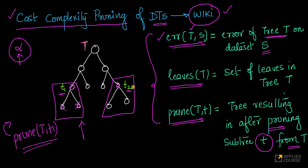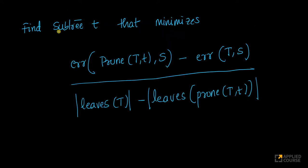So, you can either prune t1 or t2. So, what you do is, find the subtree t. Here, this subtree could be t1 or t2. Find that subtree that minimizes this expression.